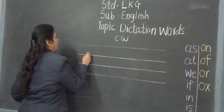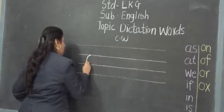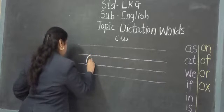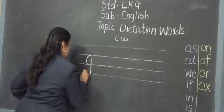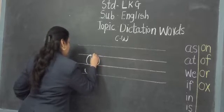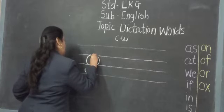Put your pencil on first blue line and write small G, small G, and small O, G-O go.